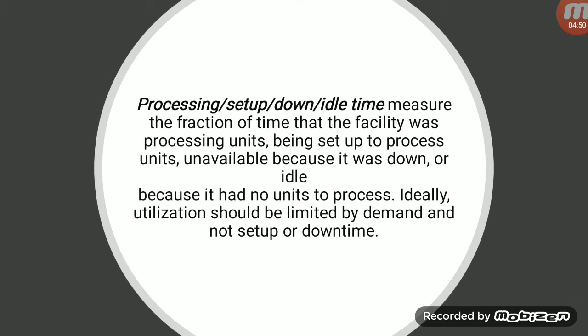Next is downtime, which is of two types: reactive and proactive. Reactive downtime is when you are running the machine and it breaks down — there are technical issues, you call the technician, and production stops until it is fixed. Idle time is also a wastage. If raw material is not available or there is no market demand, you will not produce. If raw material is delayed by 2-3 hours, your capacity is wasted. This is why we cannot achieve full utilization.